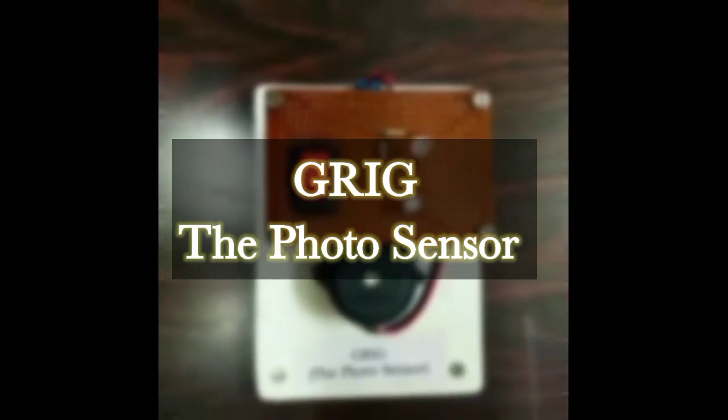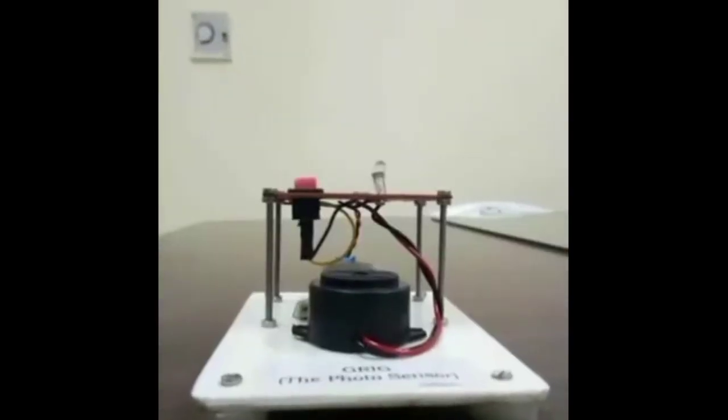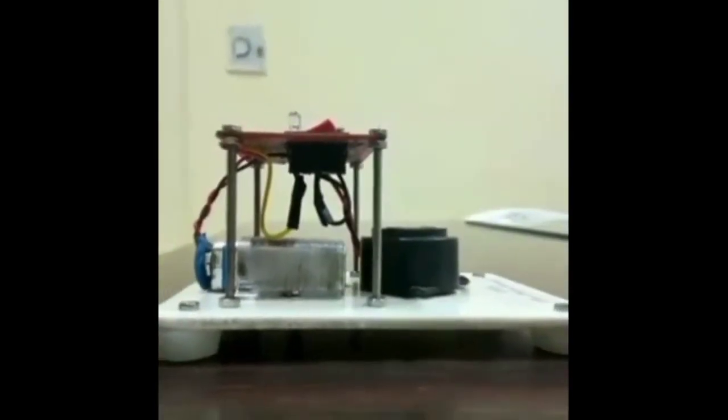GRIQ, the photosensor. The most common use of photosensor, often referred to as light-dependent resistor (LDR), is to detect the presence or absence of light or to measure the intensity of light.